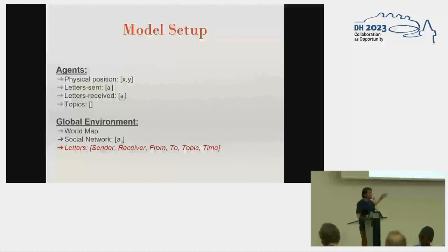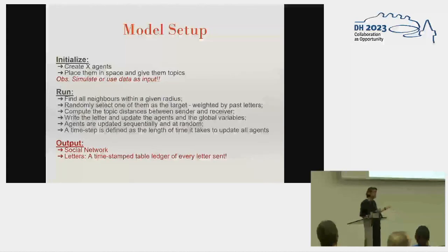We create the agents, give them topics, give them a position in space, and keep a record of every letter they send and receive and who it's from. We also have this global environment with the global map social network. The main thing is this lattice where we have information on the sender, receiver, date, and so much more. We use census data from around the same time to position them across different cities in Europe.